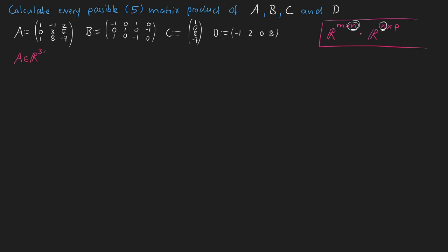For this exercise we assume that the matrices are composed of real numbers. The dimension of matrix A is 3×3, because A has 3 rows and 3 columns. Matrix B has dimension 3×4, because B has 3 rows and 4 columns. Matrix C has 4 rows and 1 column, and D has 1 row and 4 columns.